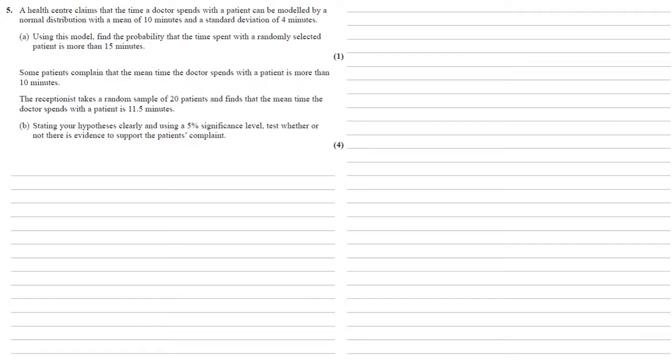A Health Centre claims that the time a doctor spends with a patient can be modelled by a normal distribution with a mean of 10 minutes and a standard deviation of 4 minutes. For Part A we need to find the probability that the time spent with a randomly selected patient is more than 15 minutes. Our model is a normal distribution with a mean of 10 and a variance of 4 squared.